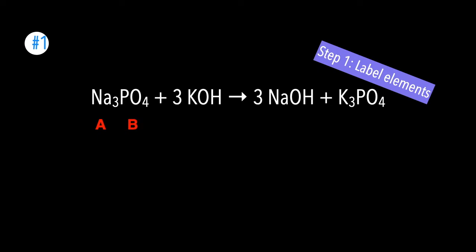We are going to label elements going from left to right. A is sodium, B is phosphate, C is potassium, and D is the hydroxyl group. On the right hand side, we're going to transfer the variables. For example, we labeled sodium A, hydroxyl group D, potassium C, and phosphate B. If you notice, we not only labeled elements, but we also labeled compounds. When you have compounds in your equation, you will label those with a single variable, like phosphate, PO4, which I labeled as B.